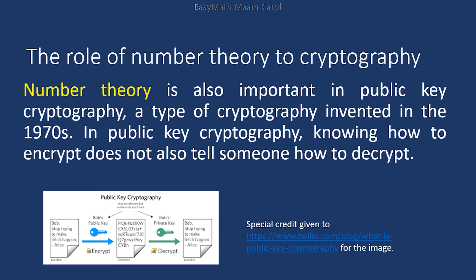Number theory is also important in public key cryptography. Public key cryptography is a type of cryptography invented in the 1970s. In the old, ancient method, both the sender and receiver needed to know the encoding and decoding process. But in the modern method called public key cryptography, only the sender knows how to encode the message. The receiver has no idea how the sender encoded it, so the receiver must figure out various techniques to decode the received message.